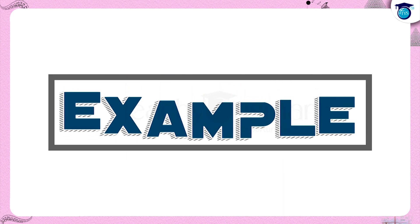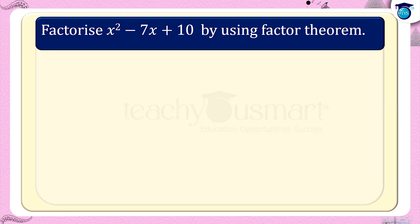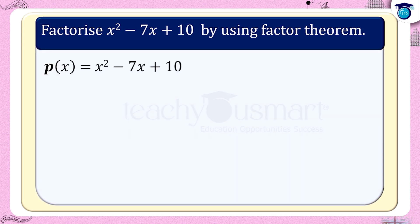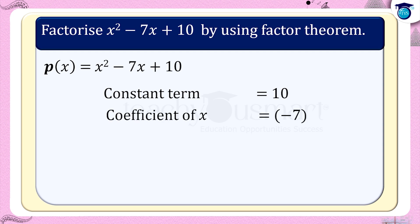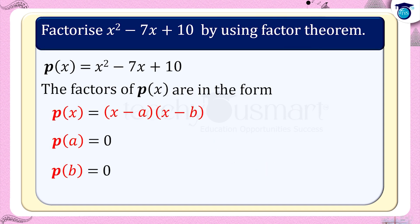Let's do one example. Factorize x squared minus 7x plus 10 by using the factor theorem. Let p(x) equals x squared minus 7x plus 10. Since it is a second degree polynomial, it contains two linear factors. Here the constant term is 10 and the coefficient of x is minus 7, which is negative. The factors of p(x) are in the form p(x) equals (x minus a) multiplied by (x minus b), which implies p(a) equals 0 and p(b) equals 0.